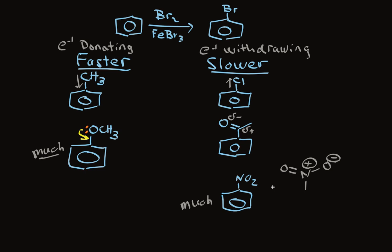Okay, we've solved the riddle of what happens to the rate when we have a substituent on the ring. Electron-donating substituents accelerate the reaction. We call that ring-activating. And electron-withdrawing substituents slow down the reaction. We call that ring-deactivating.